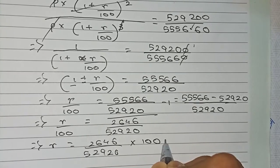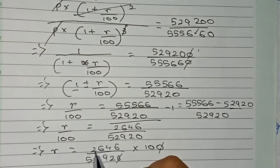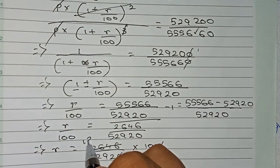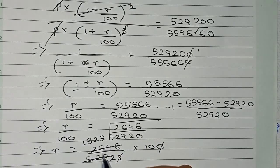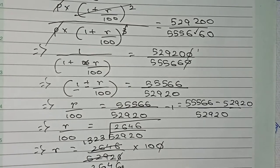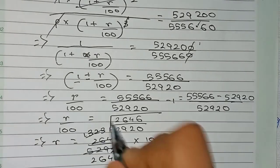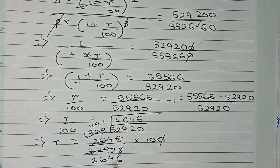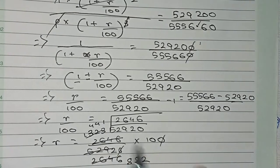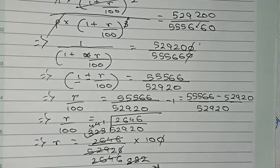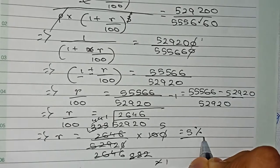So R will be equal to 2,646 by 52,920 multiplied by 100. Cut the zeros. First cut these two numbers by 2: it will become 1,323 and 26,460. Cut by 3: it will become 441 and 8,820. Now cut these directly — it will become 1 and 2, then 1 and 5. Therefore R equals 5 percent. So the rate of interest is 5% per annum.